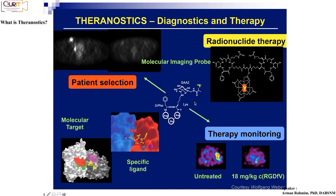But if instead you take the same molecule and radio-label it with something different — let's say yttrium-90, which emits beta rays or alpha particles — then instead of imaging the cell, you're actually sitting on the cell and killing it. You're targeting it, attacking it, bombarding it. You could then do imaging after or during therapy to see what happened — this could be before treatment, this could be after treatment.